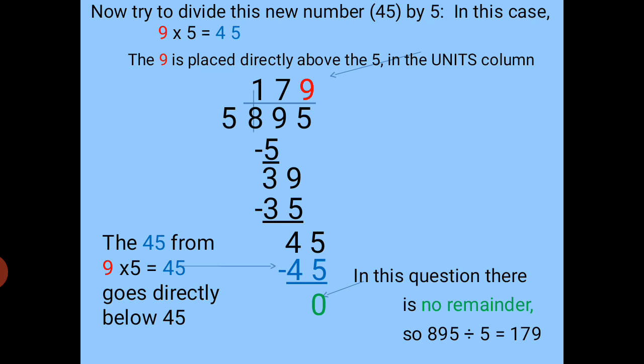In this question there is no remainder — the remainder is 0. Therefore, 895 is exactly divisible by 5 because the remainder is 0. If the remainder is 0, that means the number is exactly divisible by the divisor. Here the divisor is 5, so 895 is exactly divisible by 5. When we divide 895 by 5, we get the quotient 179.